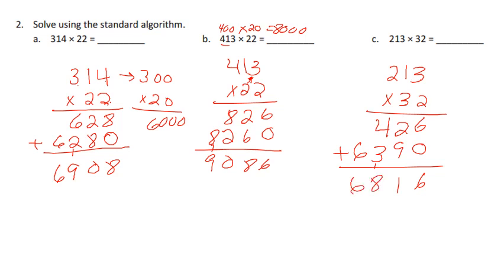Doing our estimation, 213 will be closer to 200, 32 would be closer to 30. 3 times 2 is 6 and 3 zeros, pretty close estimate.